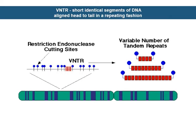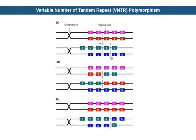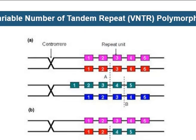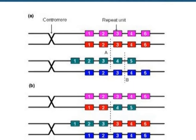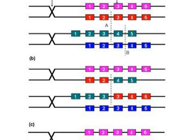VNTRs are short identical segments of DNA aligned head to tail in a repeating fashion. During meiosis, two pairs of sister chromatids line up. A repetitive region of one chromatid — the third one shown in Figure 7 — does not line up exactly with its corresponding region in other chromatids. The DNA strand breaks on non-sister chromatids along line A result in unequal crossover, thus producing different numbers of repeat units in these chromatids, as shown in Figure 7.